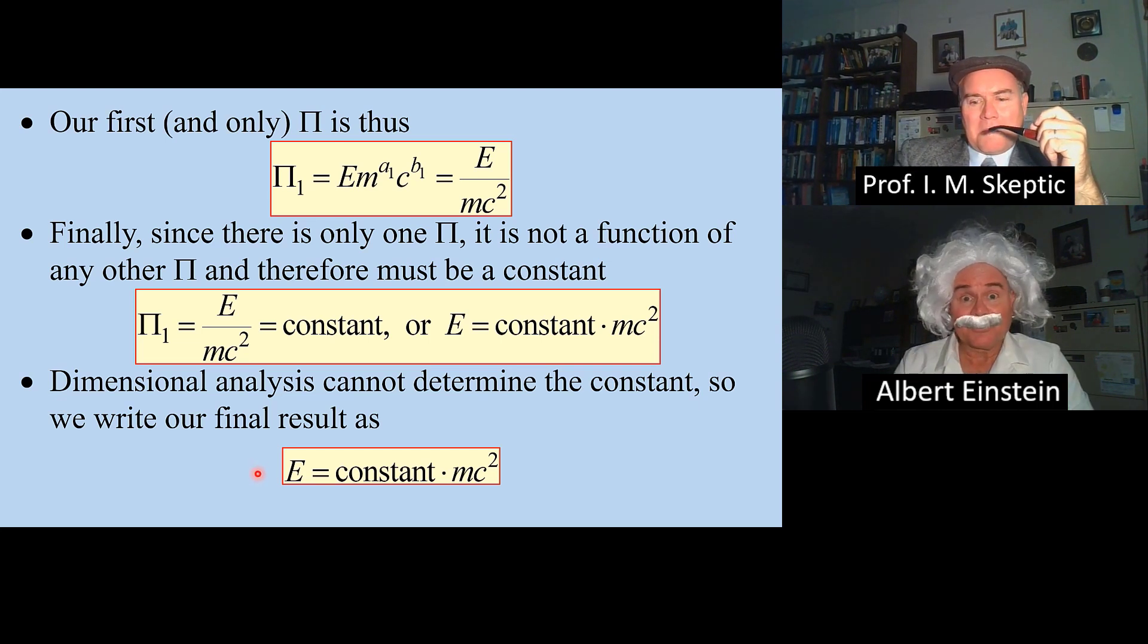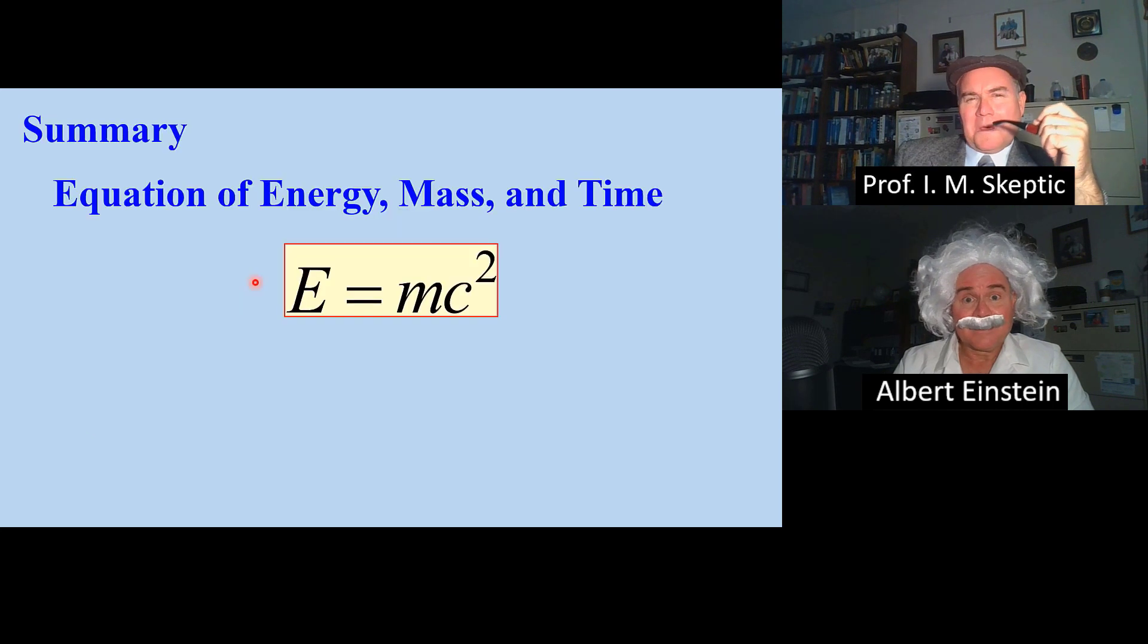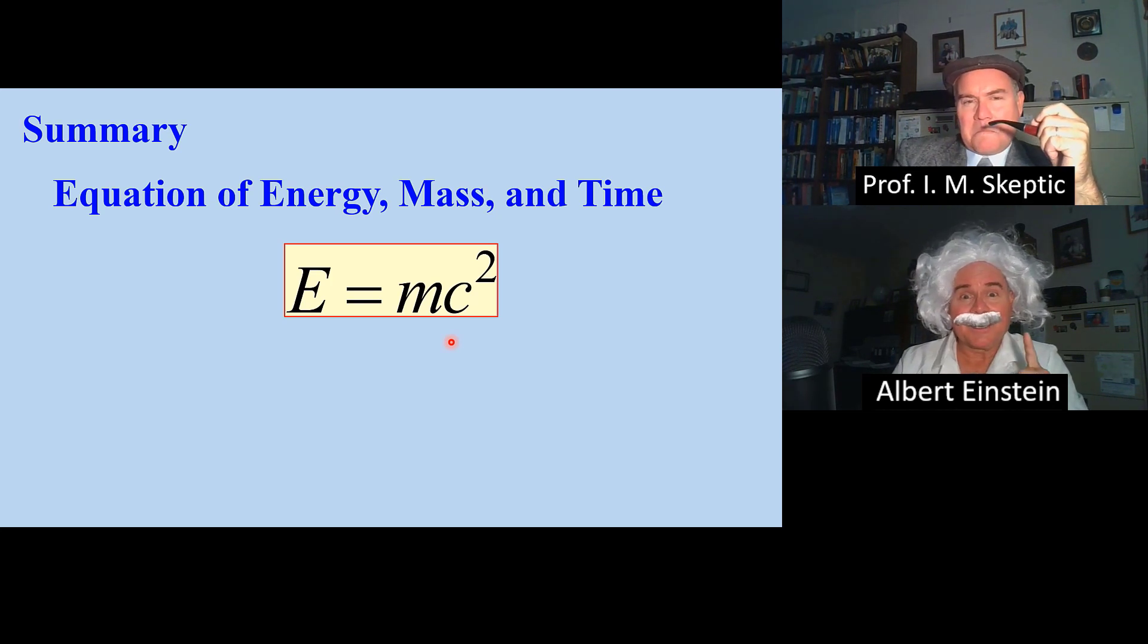Well, I think I can prove that the constant must be 1. Well, then here's your final result, e equals mc squared. That was relatively simple. Hmm, relatively. We shall call it the equation of special relativity.